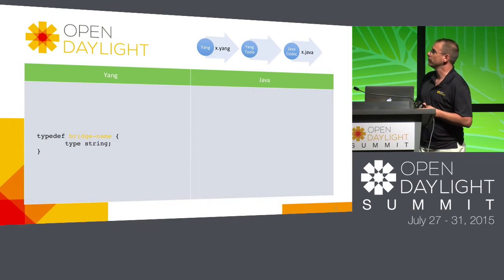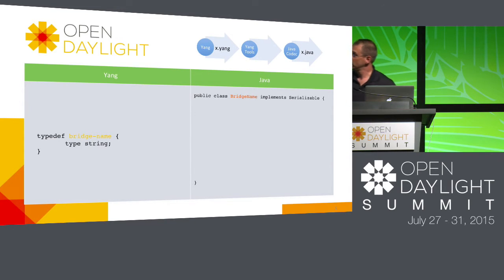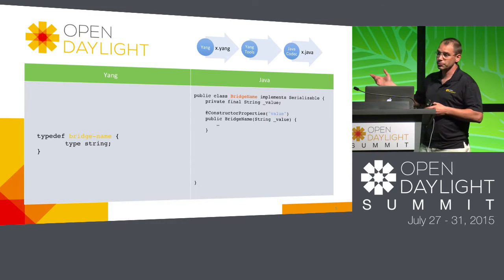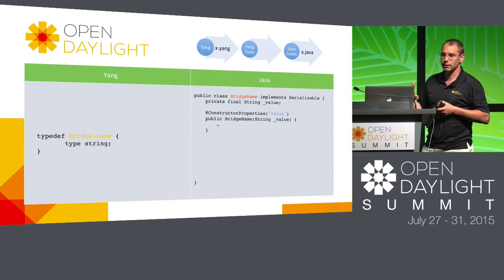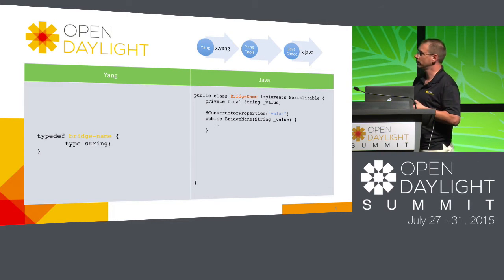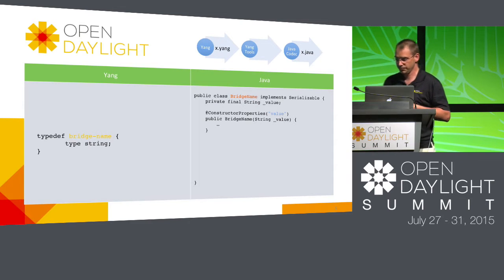Here's an example of how we go from Yang to using the Java codec to generate Java code. We take a Yang definition of bridge name and generate a public class called BridgeName. We auto-generate a constructor for the class, creating effectively a stub class. You then go in and fill in the action functions — for example, where to go get the bridge name — while the general API is already generated.